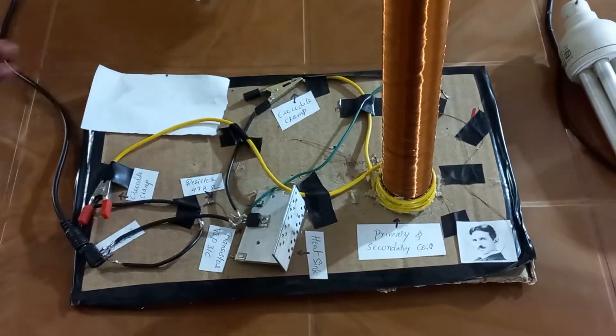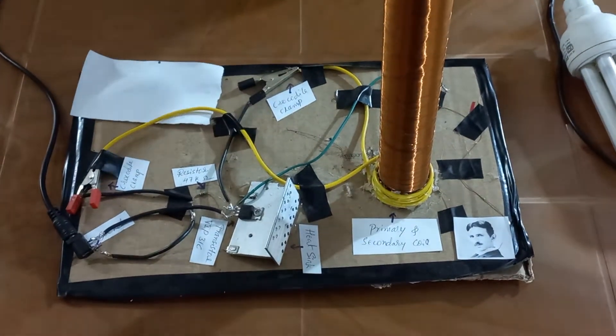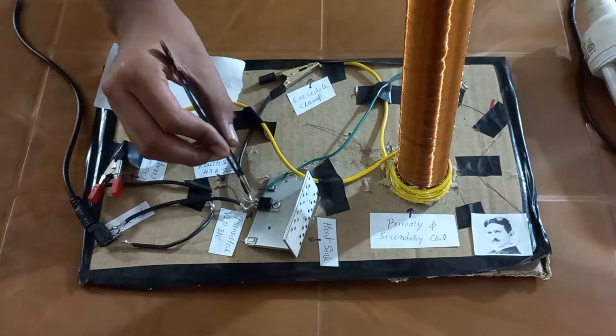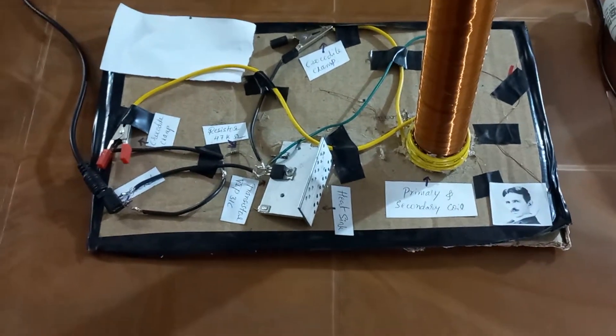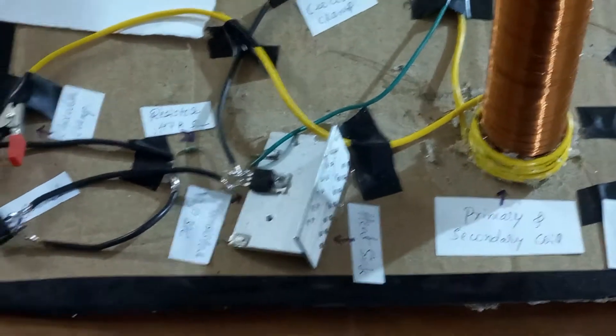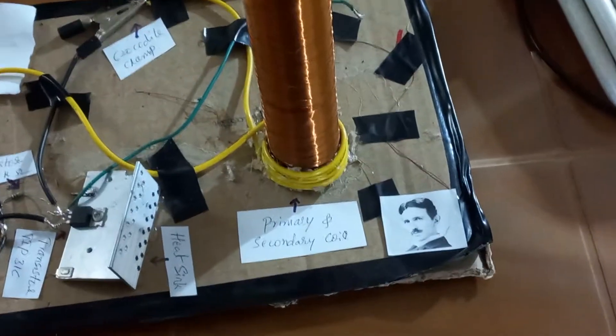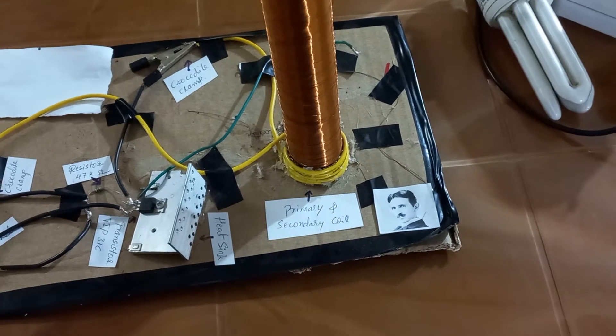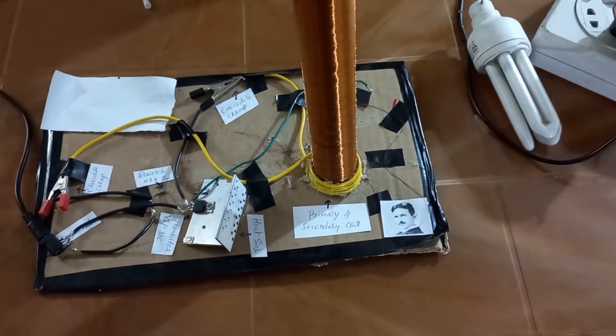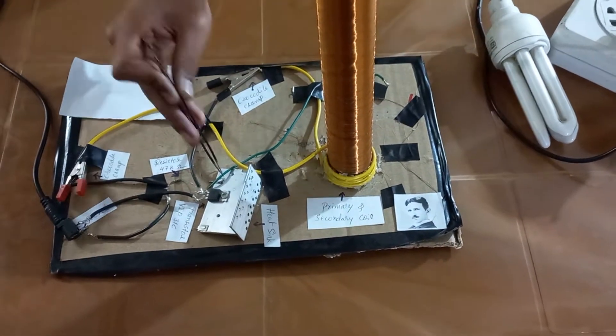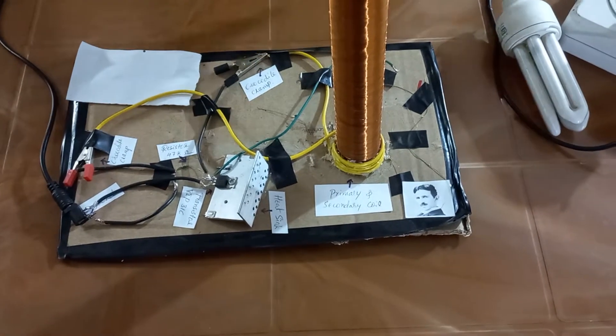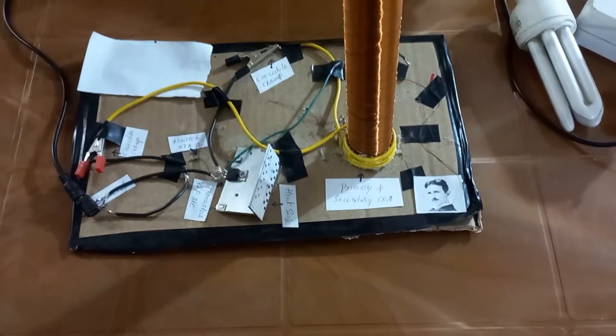At first when we supply the DC input power, the base of the transistor is positive which means that it allows the current to flow through it. And then the voltage in the primary coil rises from 0 to maximum which induces a voltage inside the secondary coil which makes the base of the transistor negative. So the transistor cuts off the supply.